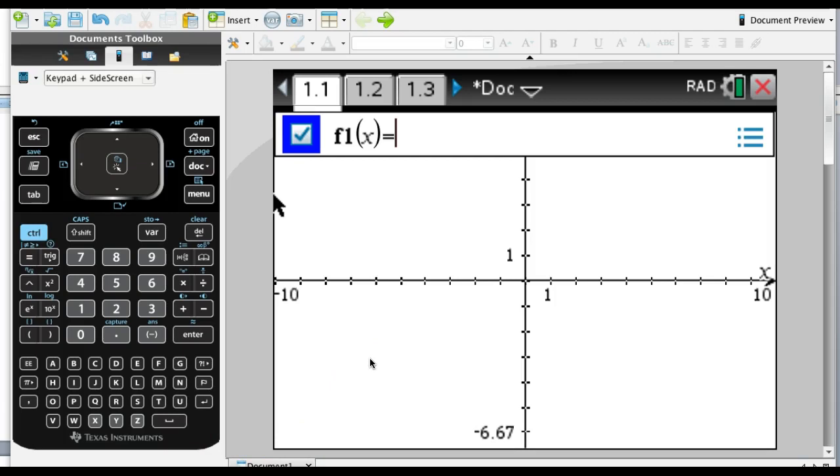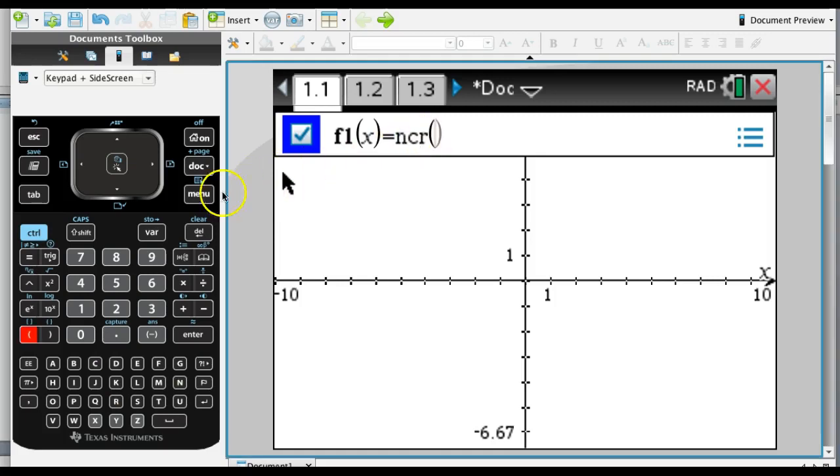What you can do is you can put in the nCr function, and that would be under the menu if you wanted to, under probability. That would be combinations, and you want to do four comma. Now I want this number—the number of successes—to change, and we defined it earlier as x, and so we'll define it again as x.